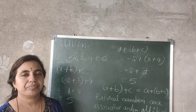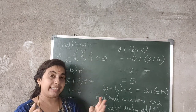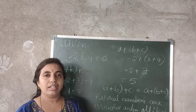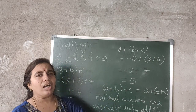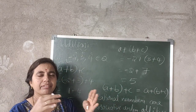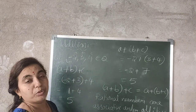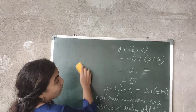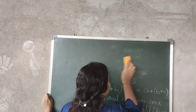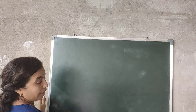Under addition, rational numbers are associative. That means when three or more numbers are added, you can change the grouping — add the first two, or the last two, or any combination — and the answer will not change. Remember this applies only under addition.